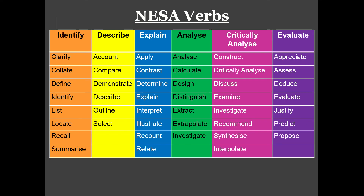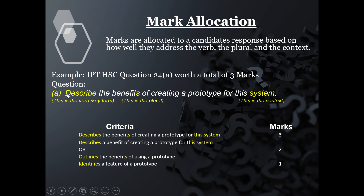Here are all the verbs, color-coded by difficulty, which also generally corresponds to mark allocation. The simpler ones — list, identify, define — are at the lower end; you're essentially regurgitating information. Describing ones are around two to three marks. As you move along, verbs like 'critically analyze,' 'interpolate,' 'propose,' and 'predict' are the hardest, potentially worth six to ten marks. If the question said 'critically analyze the benefits of creating a prototype,' it certainly wouldn't be worth only three marks.